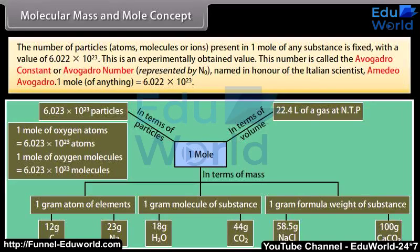This is an experimentally obtained value. This number is called the Avogadro constant or Avogadro number, represented by N0, named in honor of the Italian scientist Amedeo Avogadro. One mole of anything is equal to 6.022 times 10 raised to the power 23.